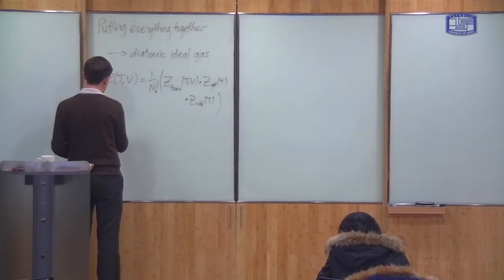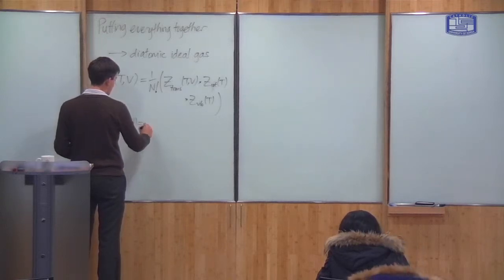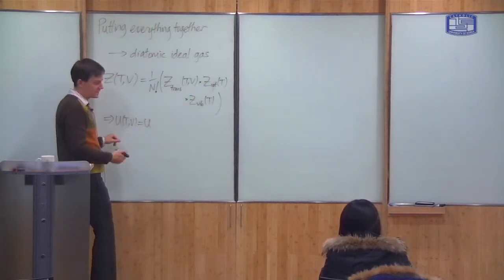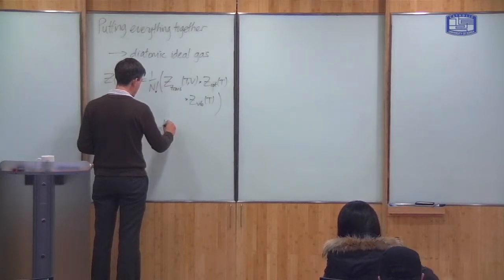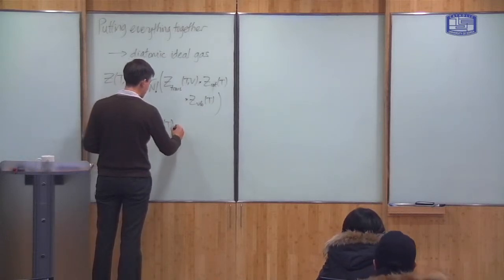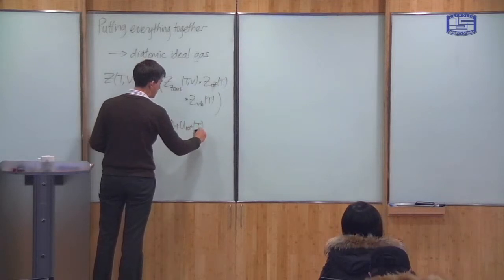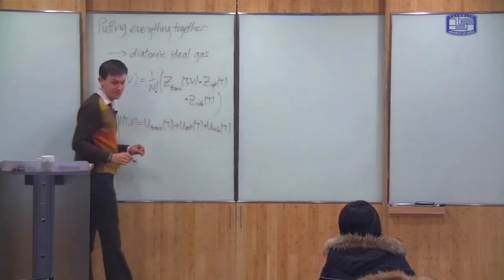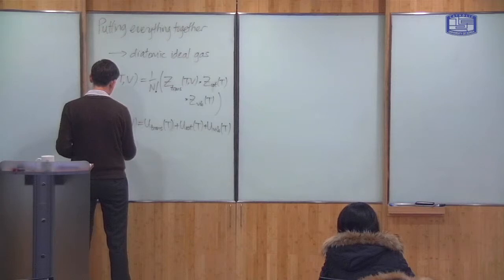This implies that the total energy is a sum of the energies. This is a product, but U is defined as log of z, so U becomes the sum. It's the sum of the translational parts of the energy, which is only a function of temperature, plus the rotational part, plus the vibrational part. And the same is true of the heat capacity, Cv.